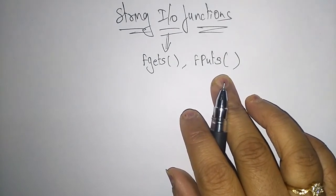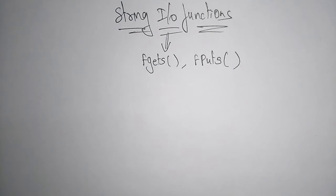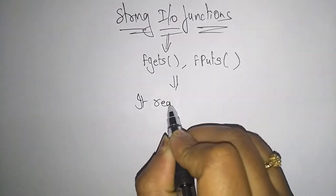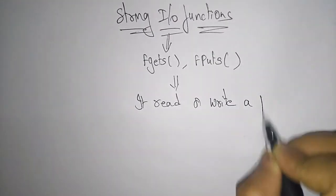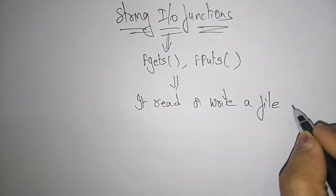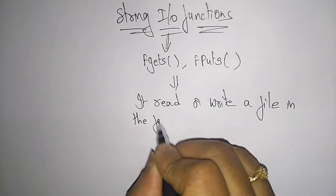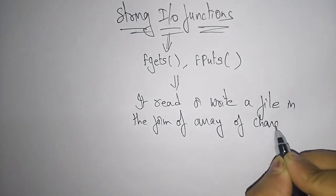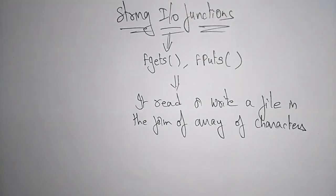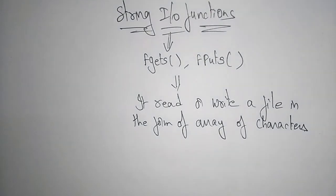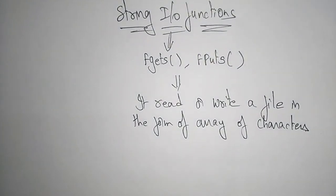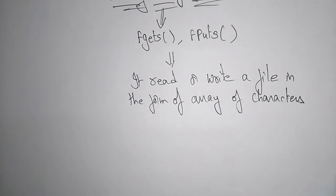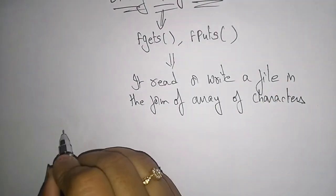So it reads or writes a file in the form of an array of characters. Array of characters is nothing but a string — if you combine a group of characters, that is called a string. So for reading and writing we use fgets and fputs. Now let us see the syntax for these.